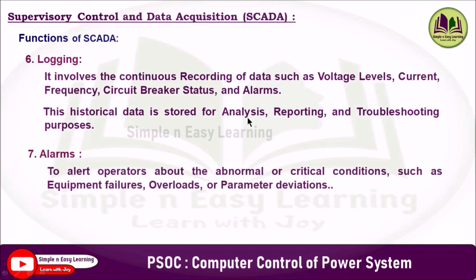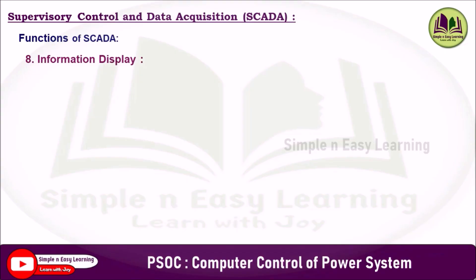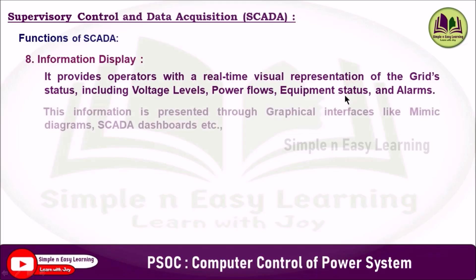The seventh function is alarms, which alert operators about abnormal and critical conditions such as equipment failure, overloads, and parameter deviations. When such events occur, SCADA generates visual and audible alerts, helping operators quickly identify and respond to issues, enhancing situational awareness and maintaining reliability and safety. The eighth function is information display, which provides operators with real-time visual representation of grid status including voltage levels, power flow, equipment status, and alarms through graphical interfaces like mimic diagrams, SCADA dashboards, and trend charts.